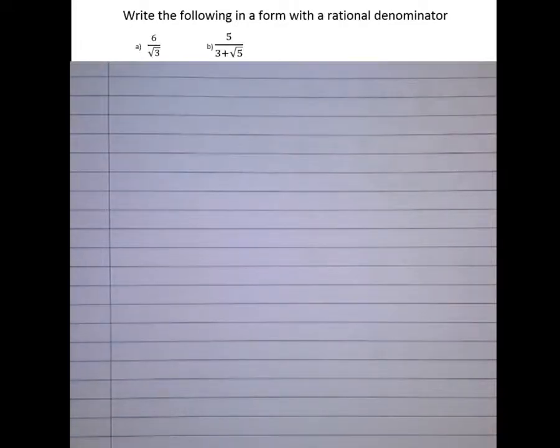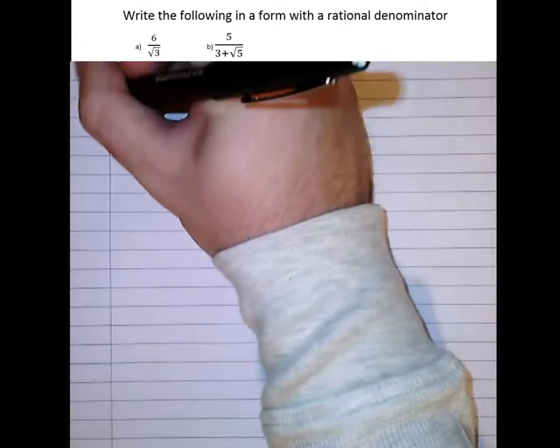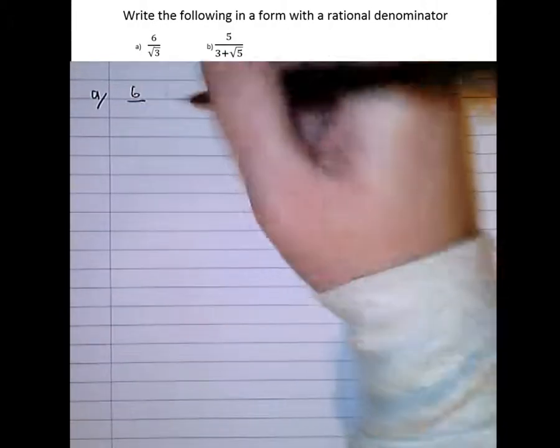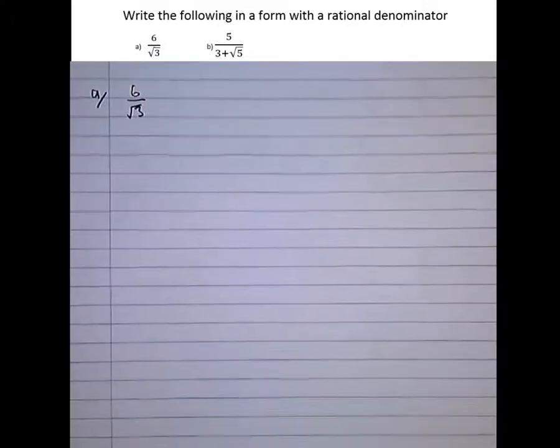We're now going to have a look at rationalising the denominator for surds. So take this first question, write 6 over root 3 in a form that has a rational denominator.